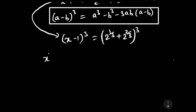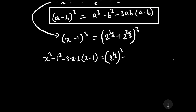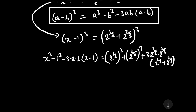That expands as x cubed minus 1 minus 3 times x times (x minus 1), equal to 2 to the power 1/3 whole cubed plus 2 to the power 2/3 whole cubed. We should know the indices rule: a to the power (m·n) is written as a to the power m into n.